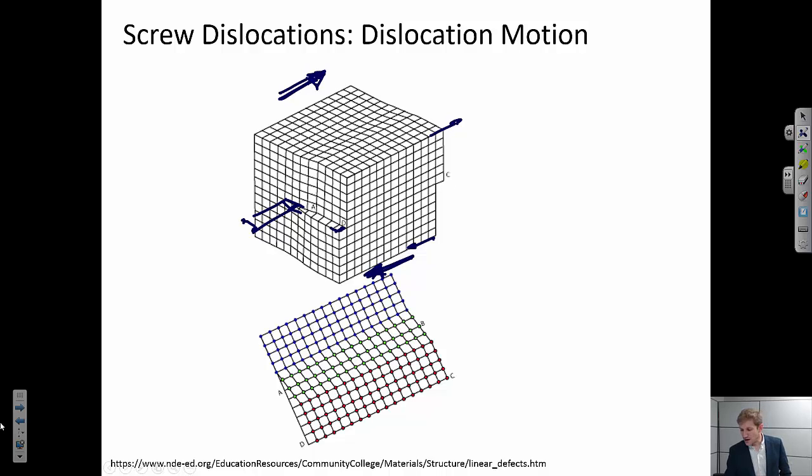And so what happens is, as I apply this shear, the screw dislocation actually travels. It looks like it's from right to left in this illustration. So it starts in the middle and it would move so it's here and then here and then here and then it's out of the volume.